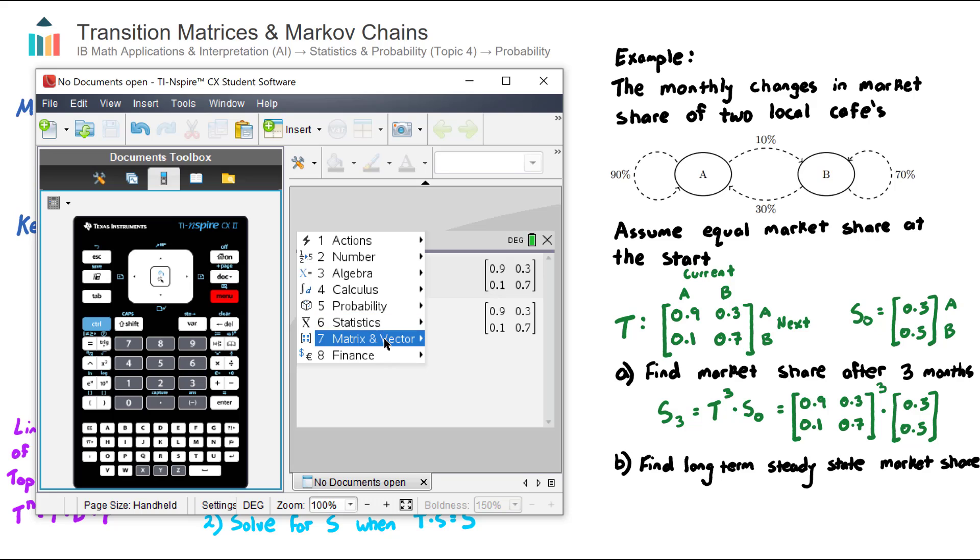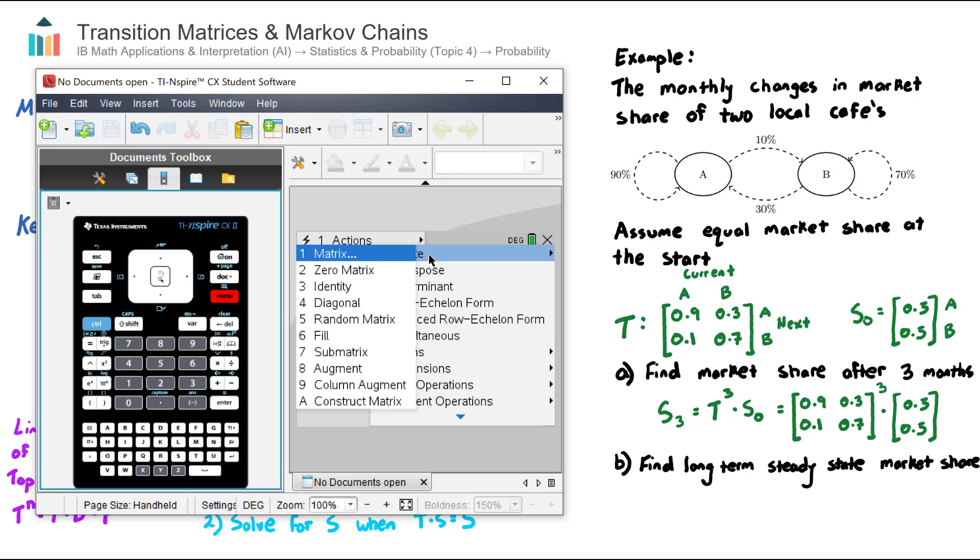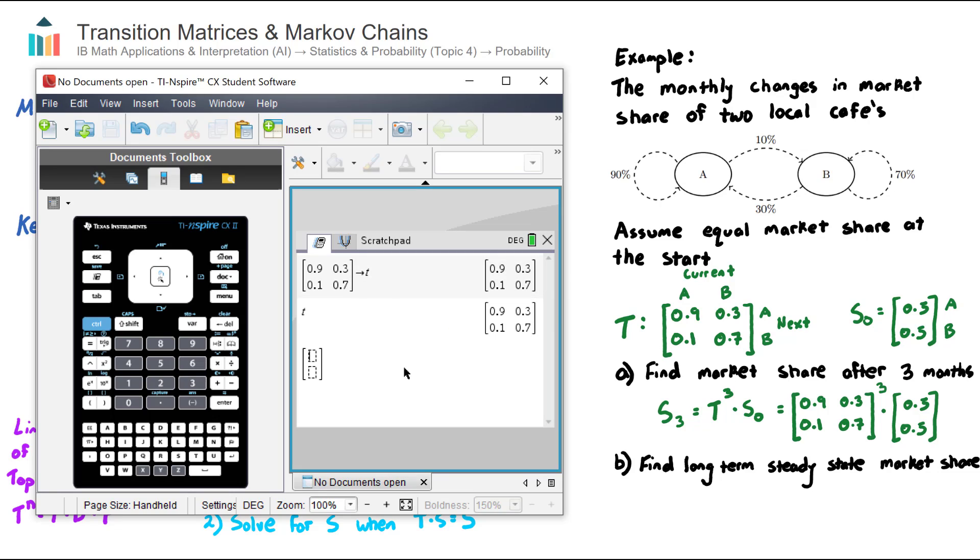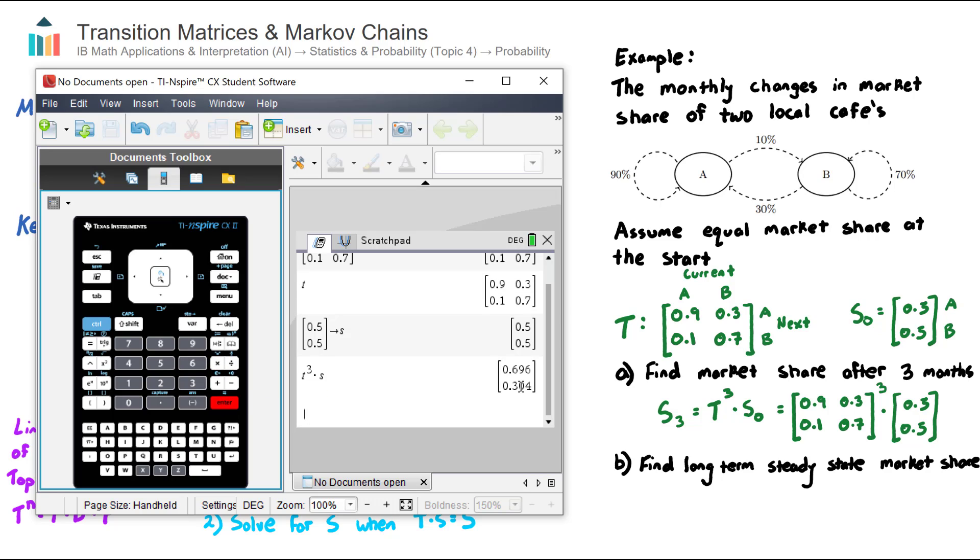Let's now go ahead and do the same for the initial state. We go menu, number seven, matrix and vector, number one, create number matrix. This is a two by one with values of 0.5 and 0.5. And I'm going to store this as letter S. Let's now answer this question here. We can now go T to the power of three multiplied by S, and we get this result. What this represents is that after three months, the market share will be 69.6% for cafe A, because cafe A was the top row in both our transition matrix and our initial state. Whereas cafe B will only have 30.4%.